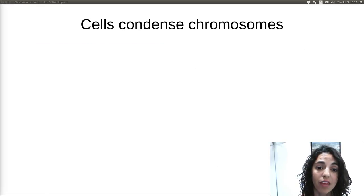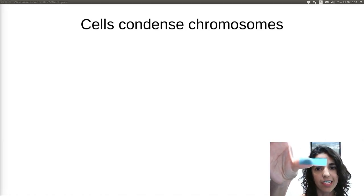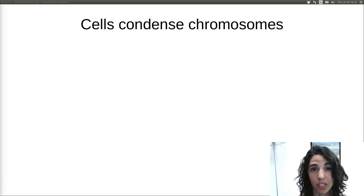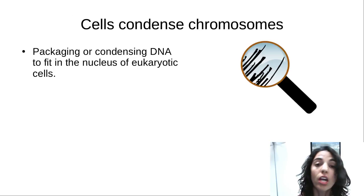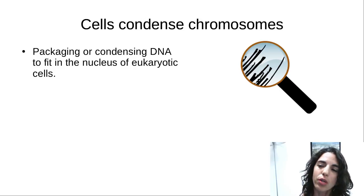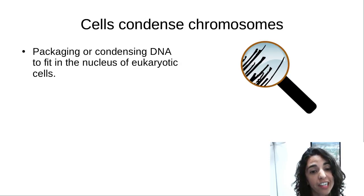If you stretch out the DNA from one of your chromosomes, it would be about four centimeters long, or about the length of this sticky tab. If you were to stretch out the DNA from all of your chromosomes in one cell, it would be about six feet long or two meters. Yet your cells package this amount of DNA into the nucleus, which is about the width of one-tenth of the human hair shown in the magnifying glass. So how do cells do this?